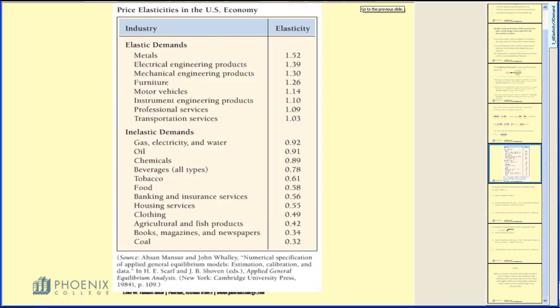Let's take a look at some of the price elasticities in the U.S. economy. On top we have items listed that are elastic demands and below we have inelastic demands. Remember when E is greater than one, an increase in price will bring a decrease in revenue. So for example, if we take a look at furniture listed at 1.26, we're saying if there's an increase in price, revenue will decrease, probably because if the price of furniture goes too high, we will stop buying it or we'll buy less of it.